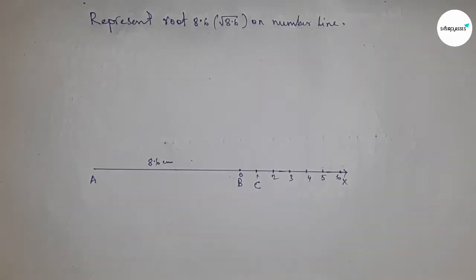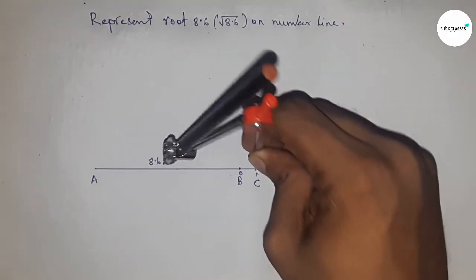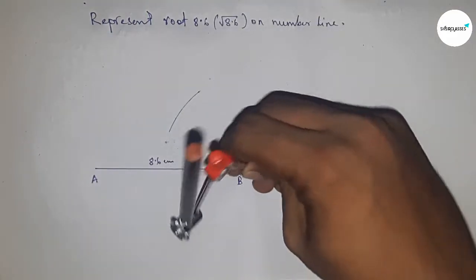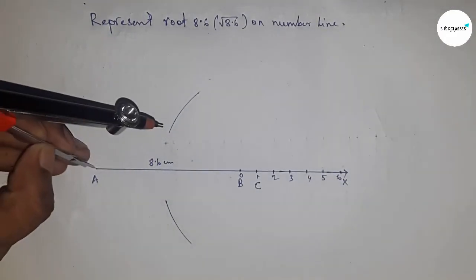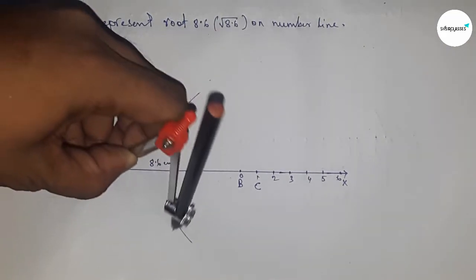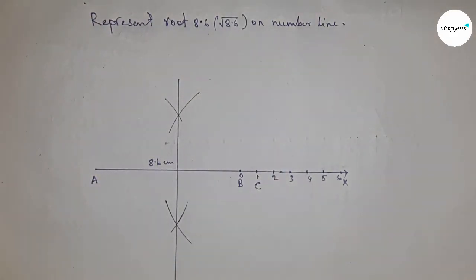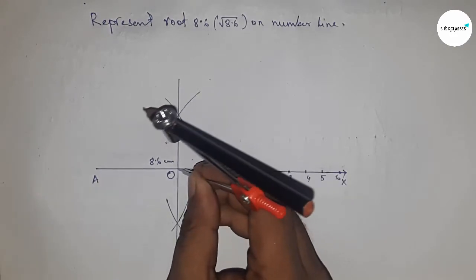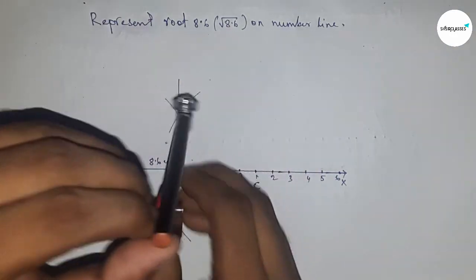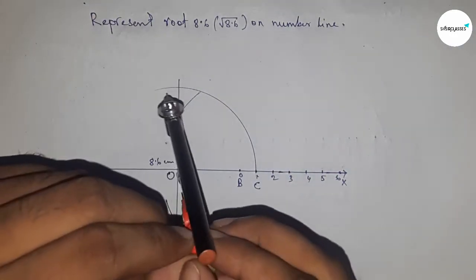Mark point C. Now I'm going to bisect line AC. Take a length greater than half of AC and draw arcs with the same length. Put the compass here and cut the arcs. Join these points, which meet at point O. Take the distance OA and OC to draw a semicircle.